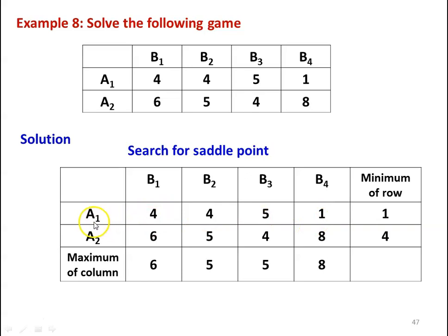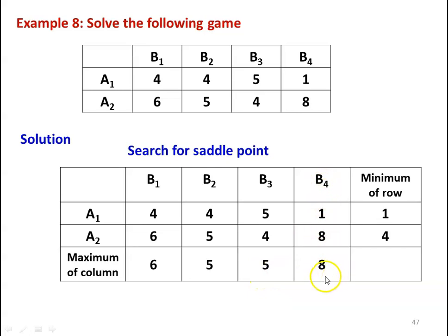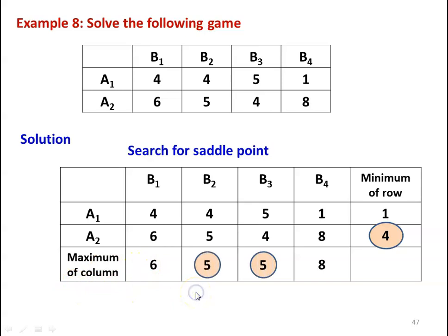For strategy A1, the row values are 4, 4, 5, 1 — minimum is 1. For strategy A2, values are 6, 5, 4, 8 — minimum is 4. So the row minima are 1 and 4. For columns: B1 max = 6, B2 max = 5, B3 max = 5, B4 max = 8. The maximum of the row minima (maximin) is 4 and the minimum of the column maxima (minimax) is 5. These two values are not equal, so there is no saddle point in the problem.